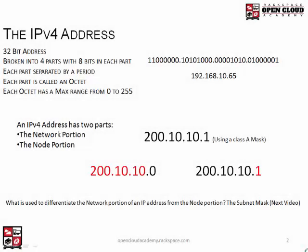An IPv4 address is a 32-bit address — 32 bits long. That's pretty big. At one time it was considered really big, with billions of different combinations possible with that many bits.